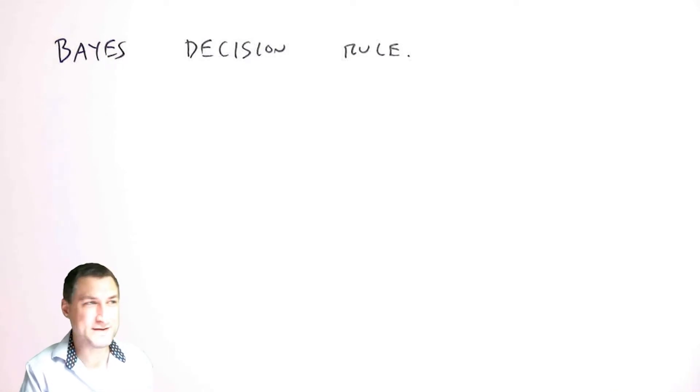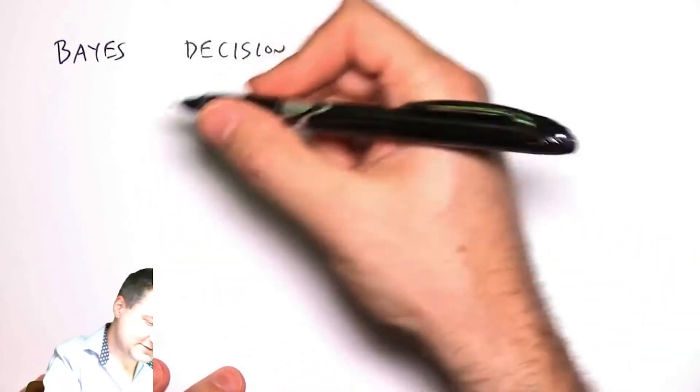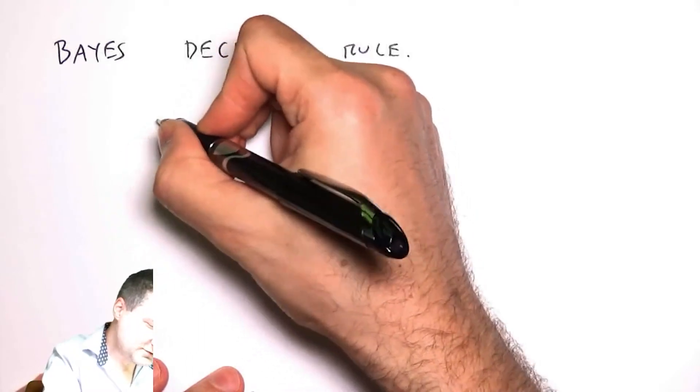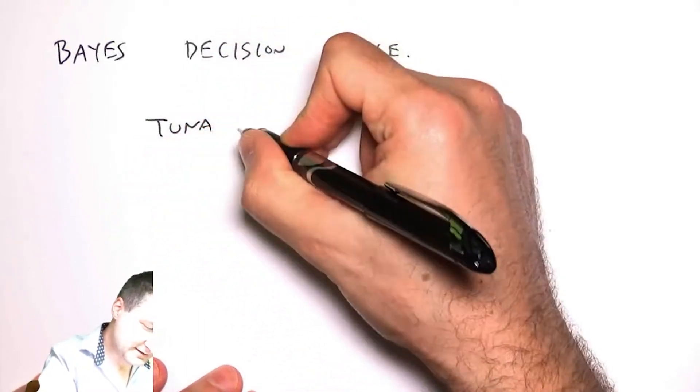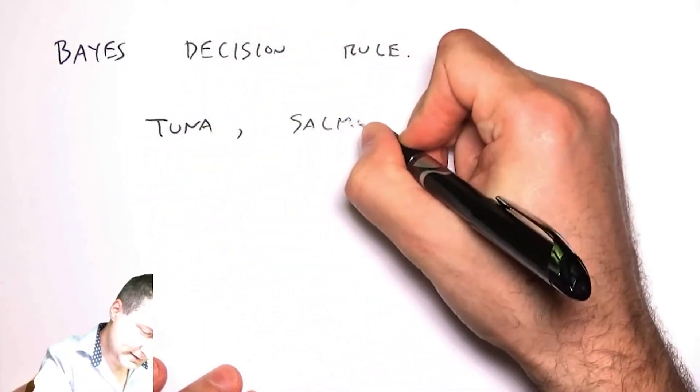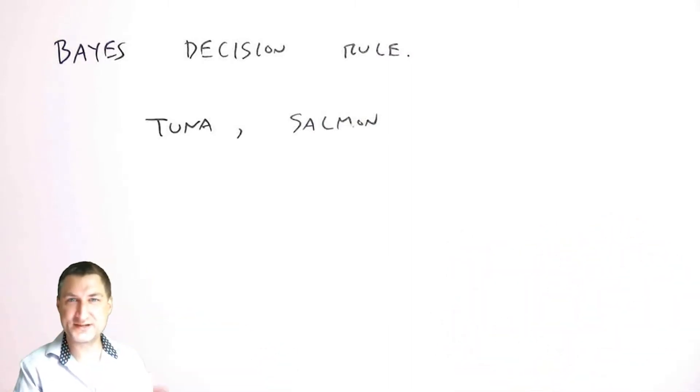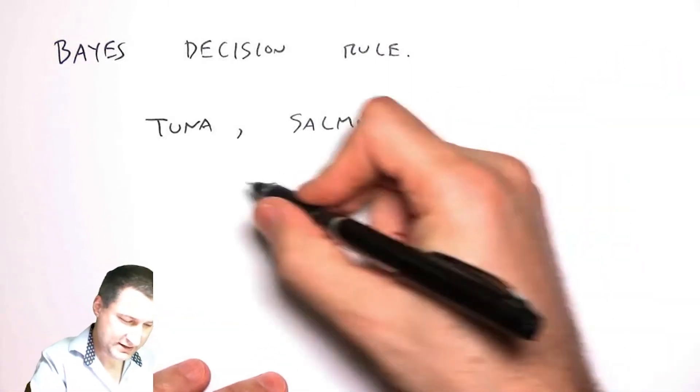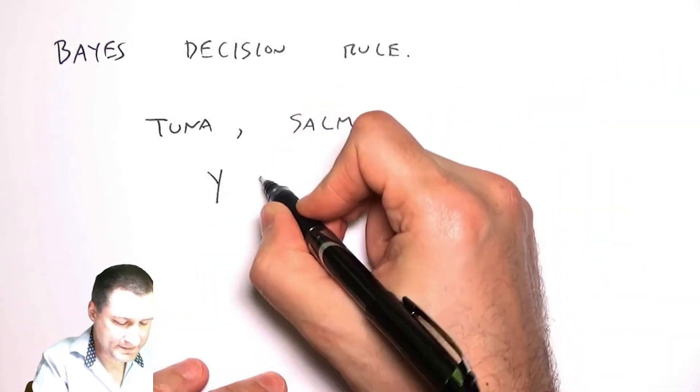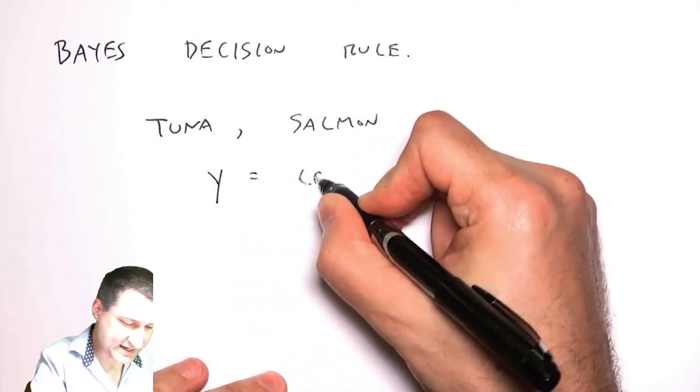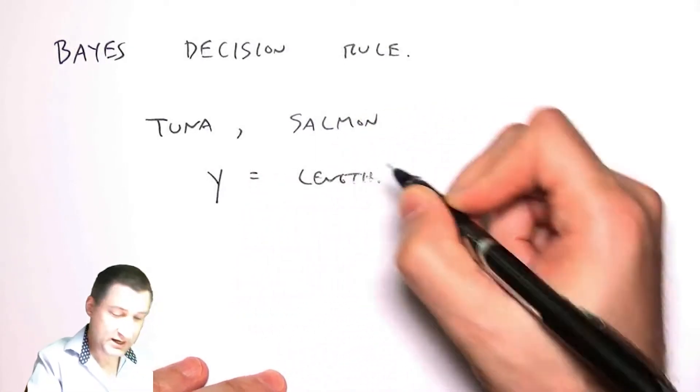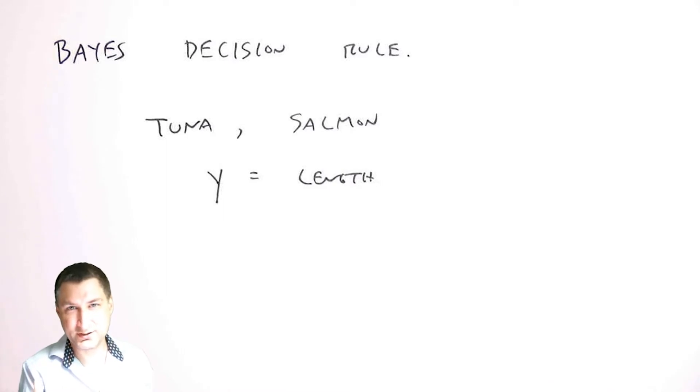The way I learned this was this classic example from this pattern recognition textbook by Duda and Hart. The idea is I have two types of fish, tuna and salmon, and each fish has some sort of feature that I measure. Let's call that y. This y could be, for example, the length of the fish, but it could be a joint random variable, like the length of the fish and the color of the fish or something like that.